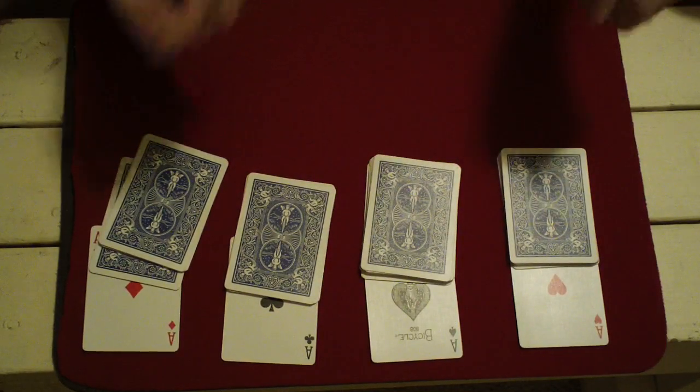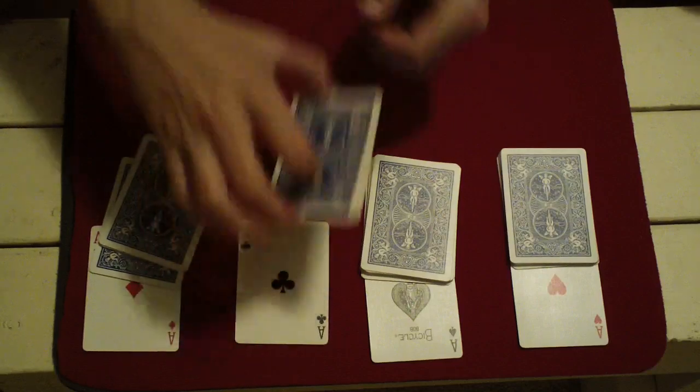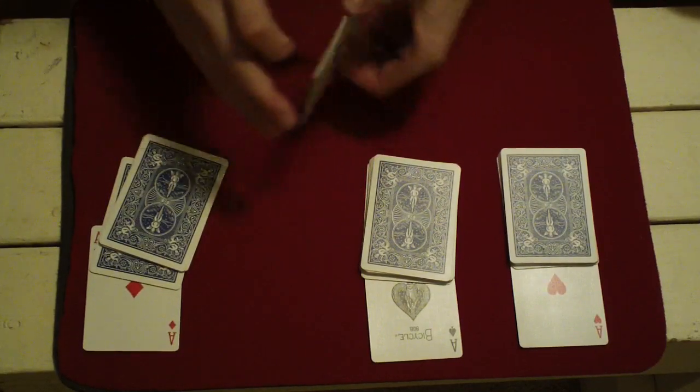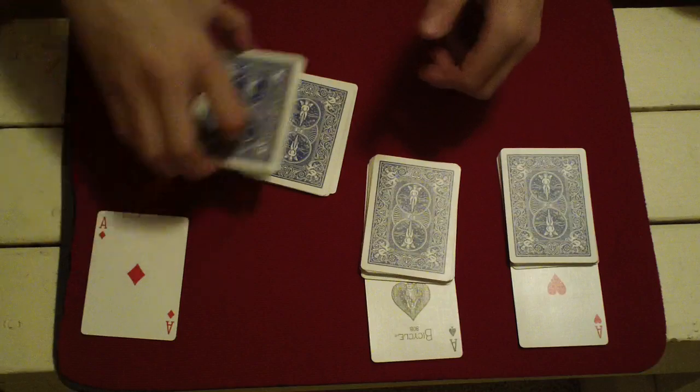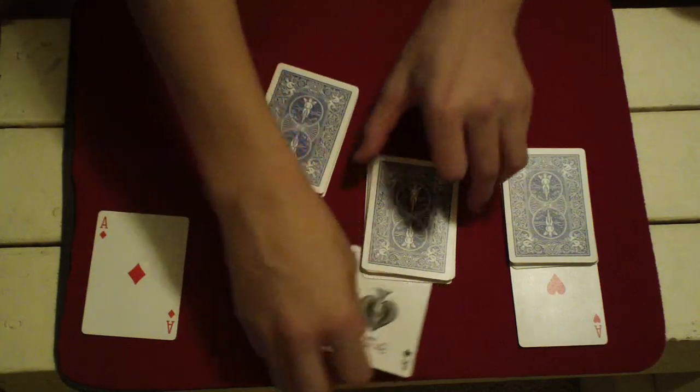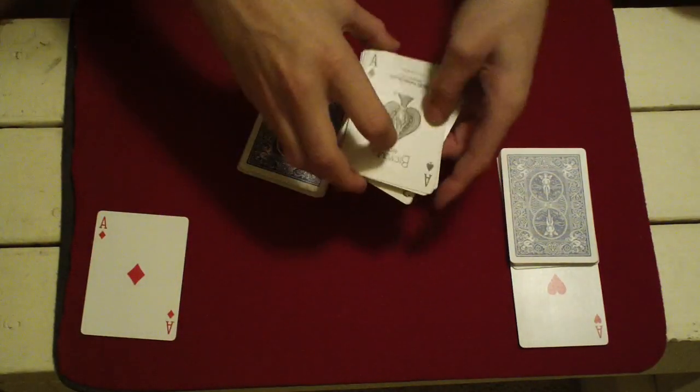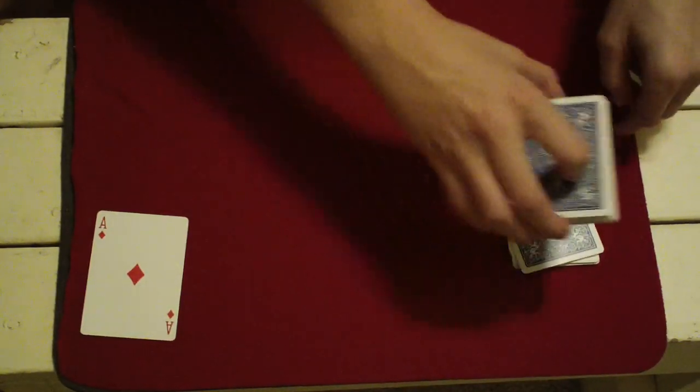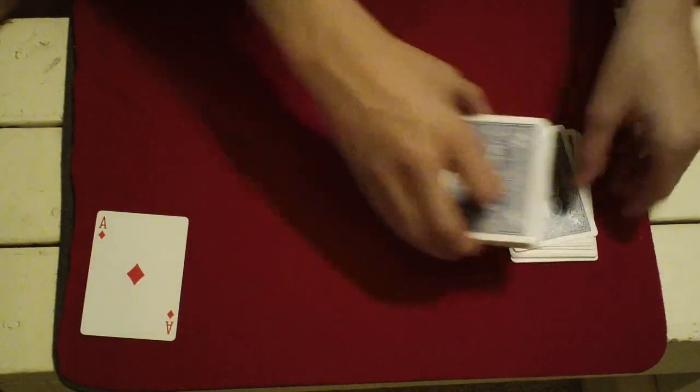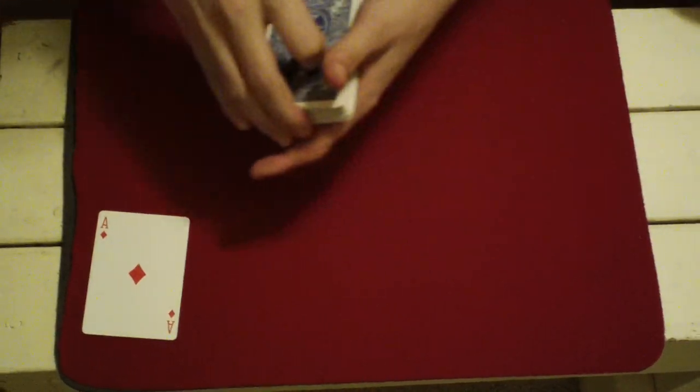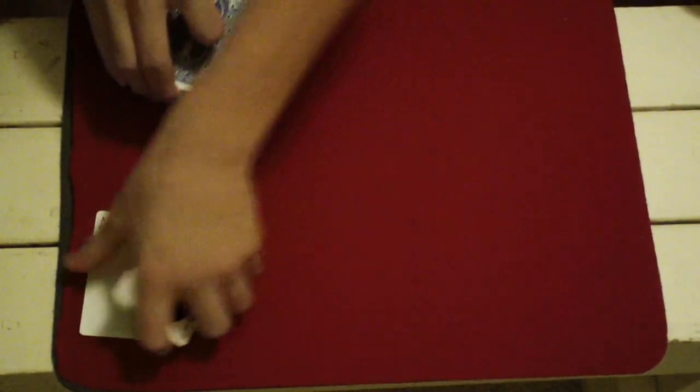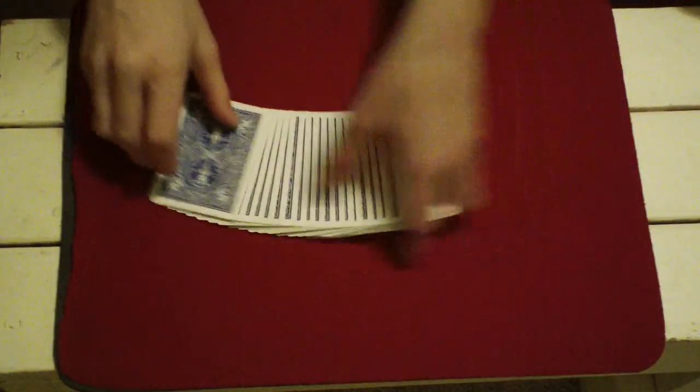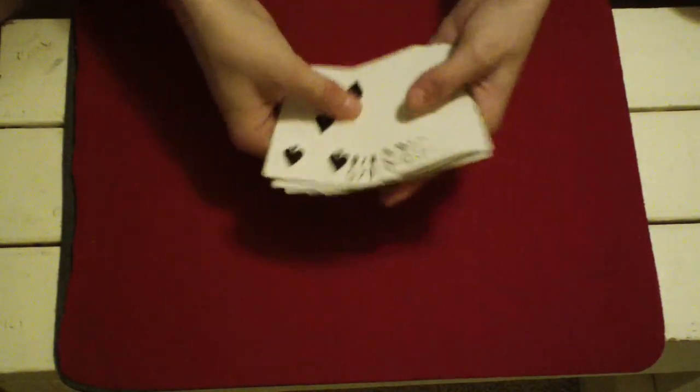So what we're going to do is lose the aces into different parts of the deck just like this. They can just go into different parts. We'll take the last ace and place it somewhere in the middle as well. And we can have them all lost just like that. So the aces are all lost into different parts of the pack.